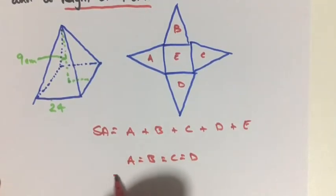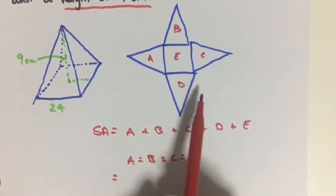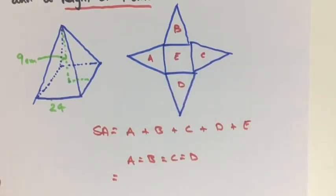So to make this easier we can just say four times the area of our triangles. Because we know these are triangles, so four times one-half.